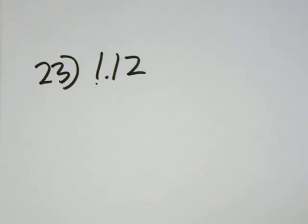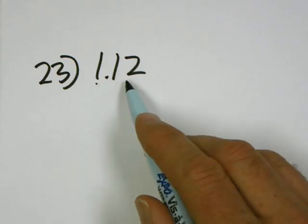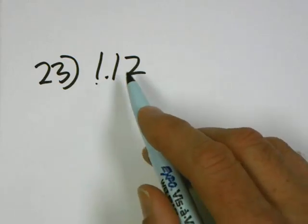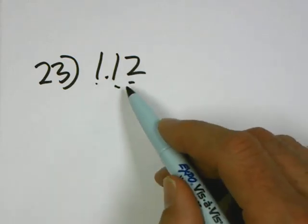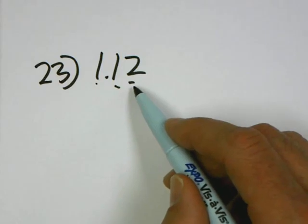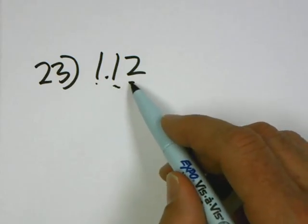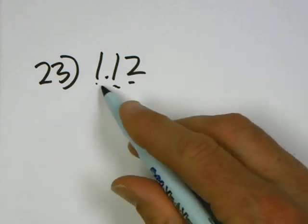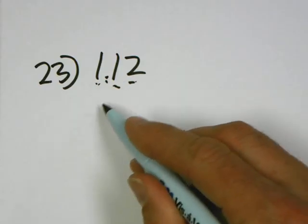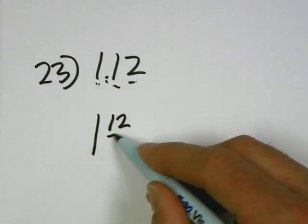So, what we do is 1 and 12 hundredths - tenths, hundredths. That means this 12 goes over the denominator of a hundredth. So it's 1 and 12 hundredths.